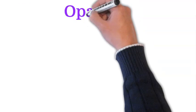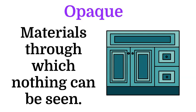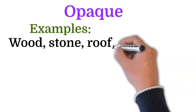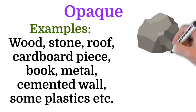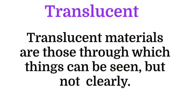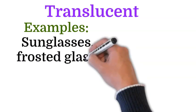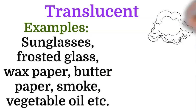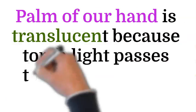Materials through which nothing can be seen are called opaque materials. Examples: wood, stone, roof, cardboard piece, book, metal, cemented wall, some plastics, etc. Translucent means materials through which things can be seen, but not clearly. Examples: sunglasses, frosted glass, wax paper, butter paper, smoke, vegetable oil, etc. The palm of our hand is translucent because torchlight passes through it, but not clearly.